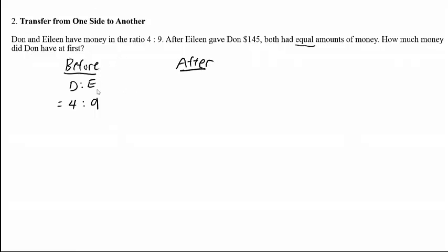When you see this type of question — when you want to transfer an amount from one side to another — you need to find the total. The reason is because when you transfer from one side to another side, the total remains the same.